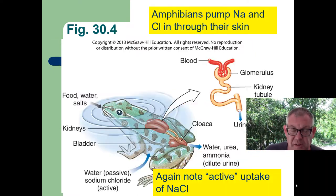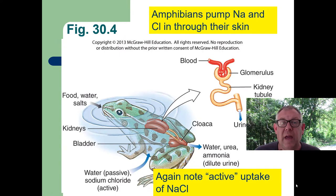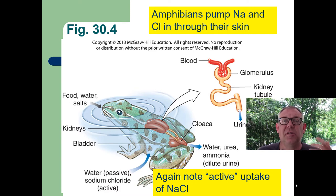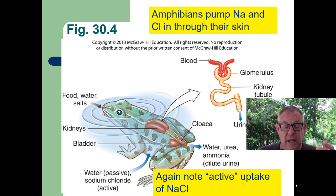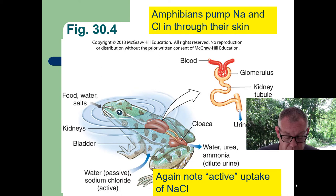Here's another freshwater vertebrate example: amphibians do the same thing — they actively pump in sodium chloride. At the adult stage they don't have gills, so they have these pumps embedded in their skin. It uses ATP to pump those salts in because they're constantly leaking them out to the freshwater environment.